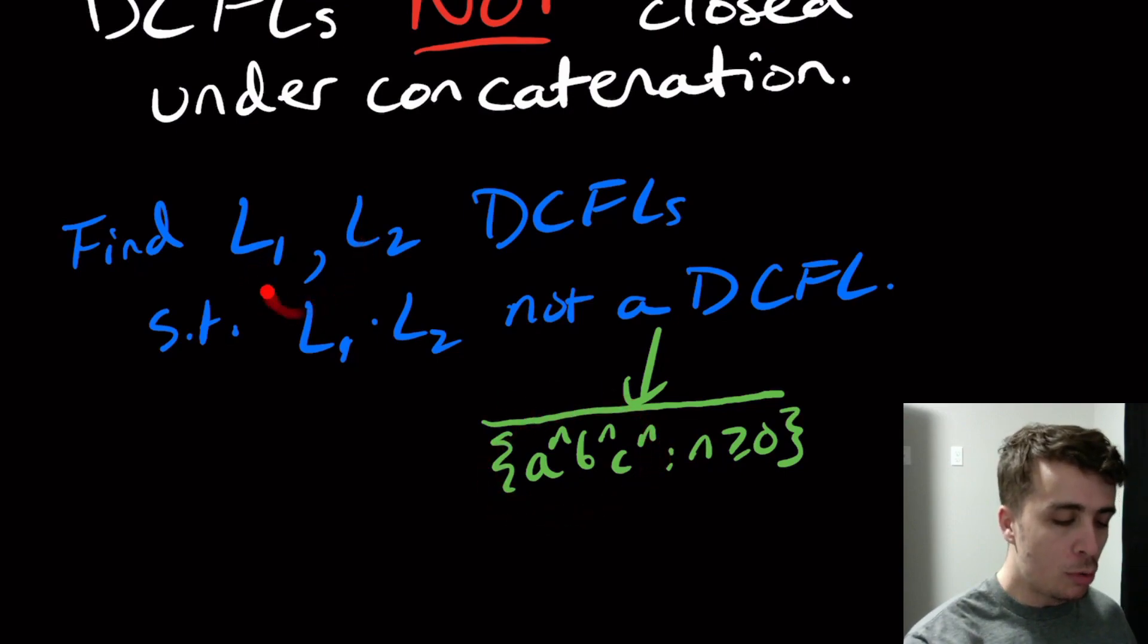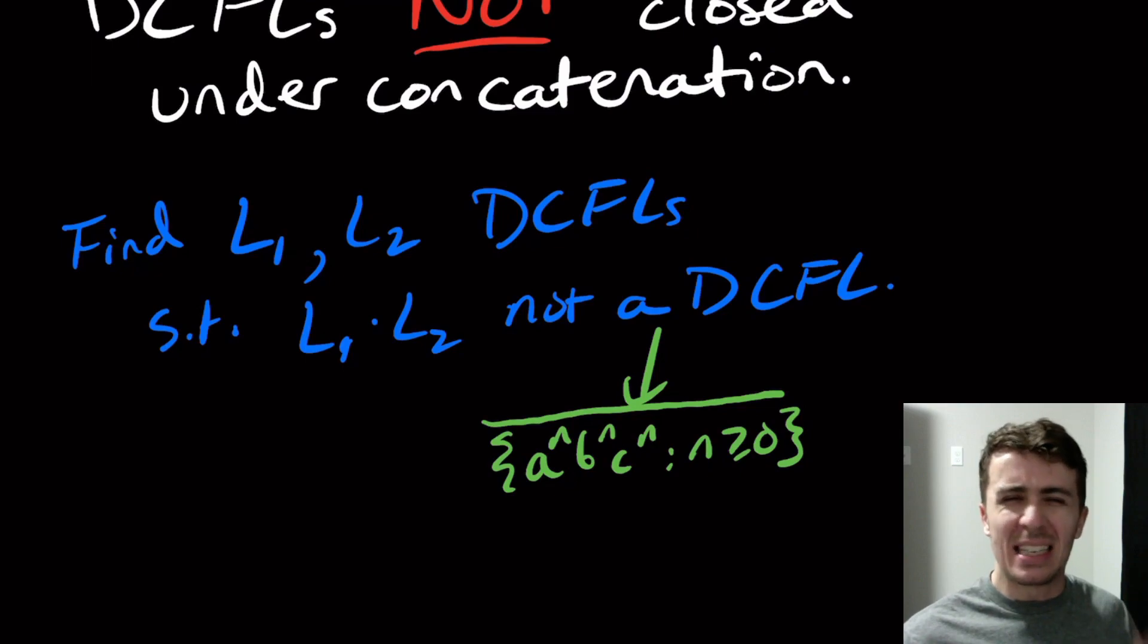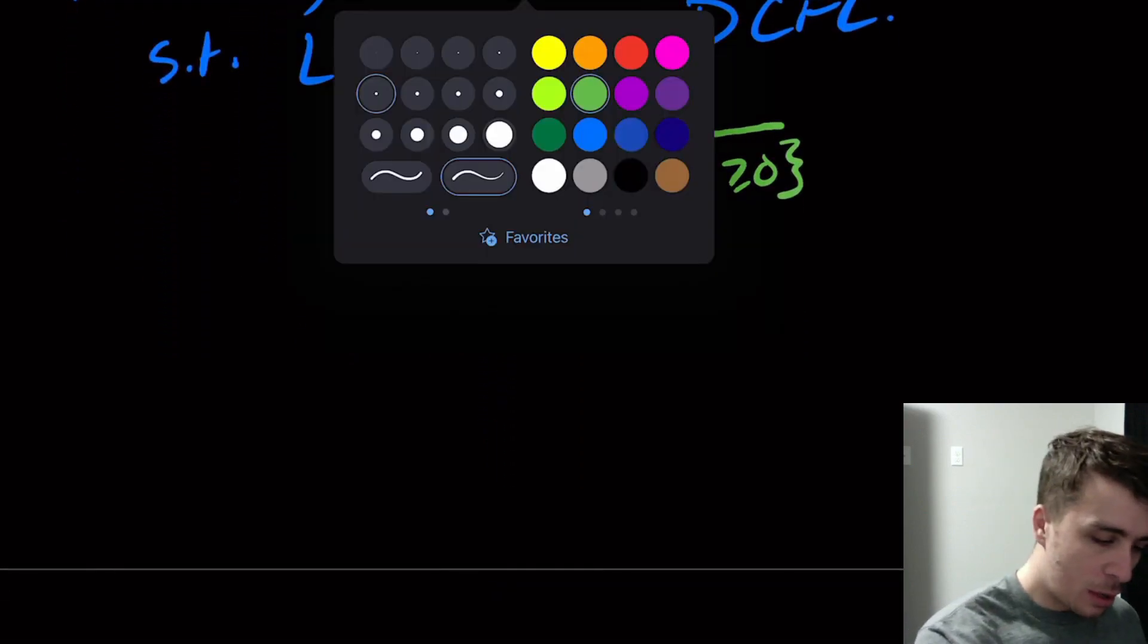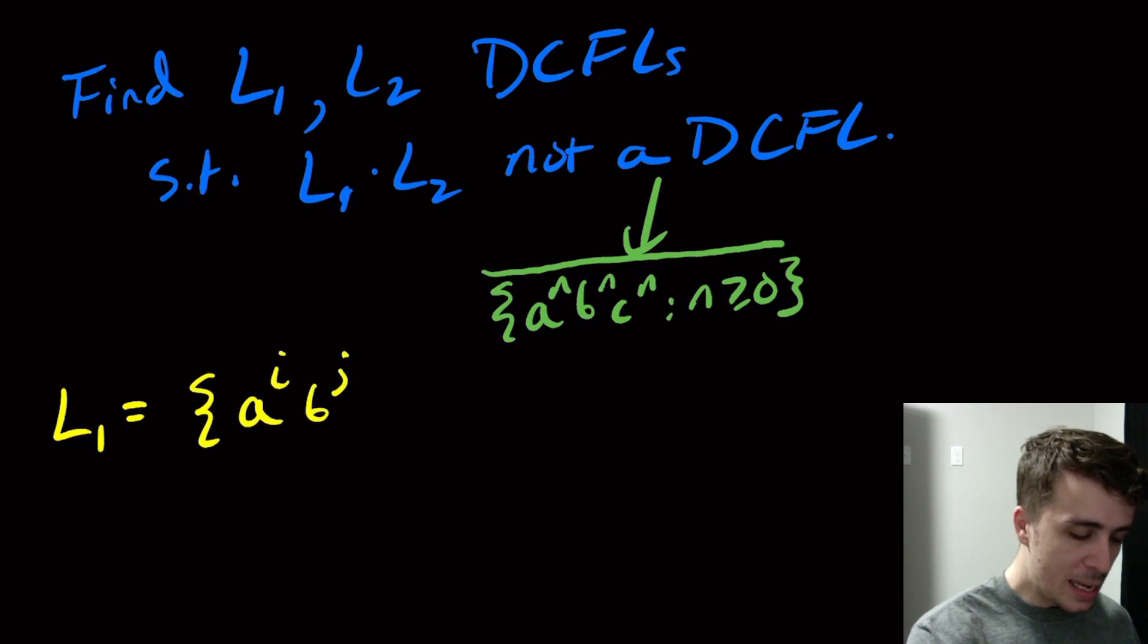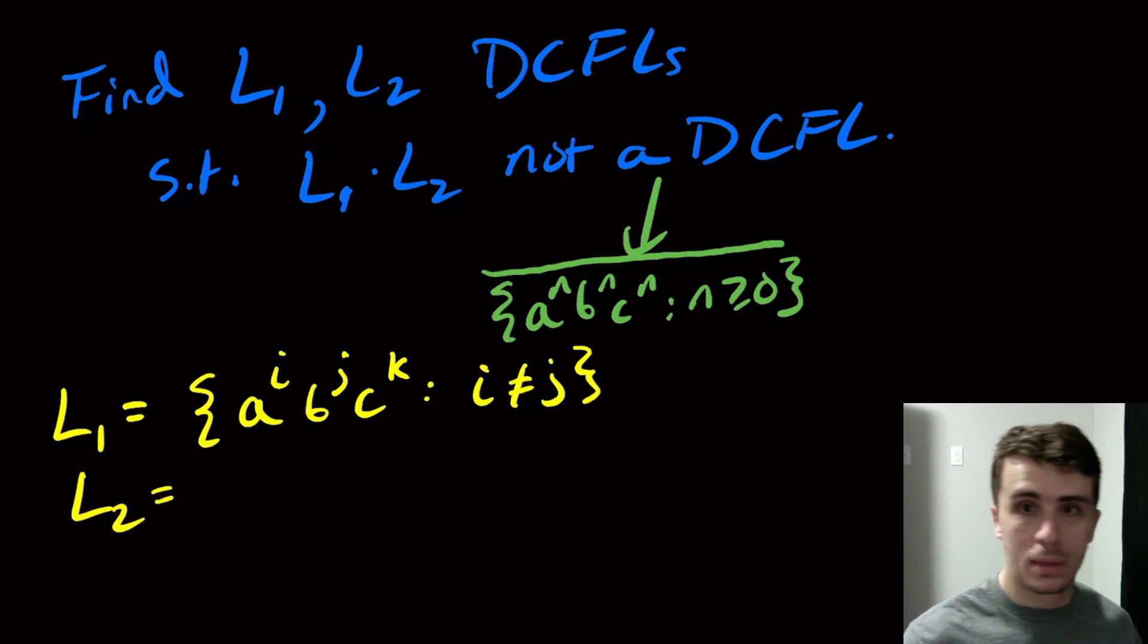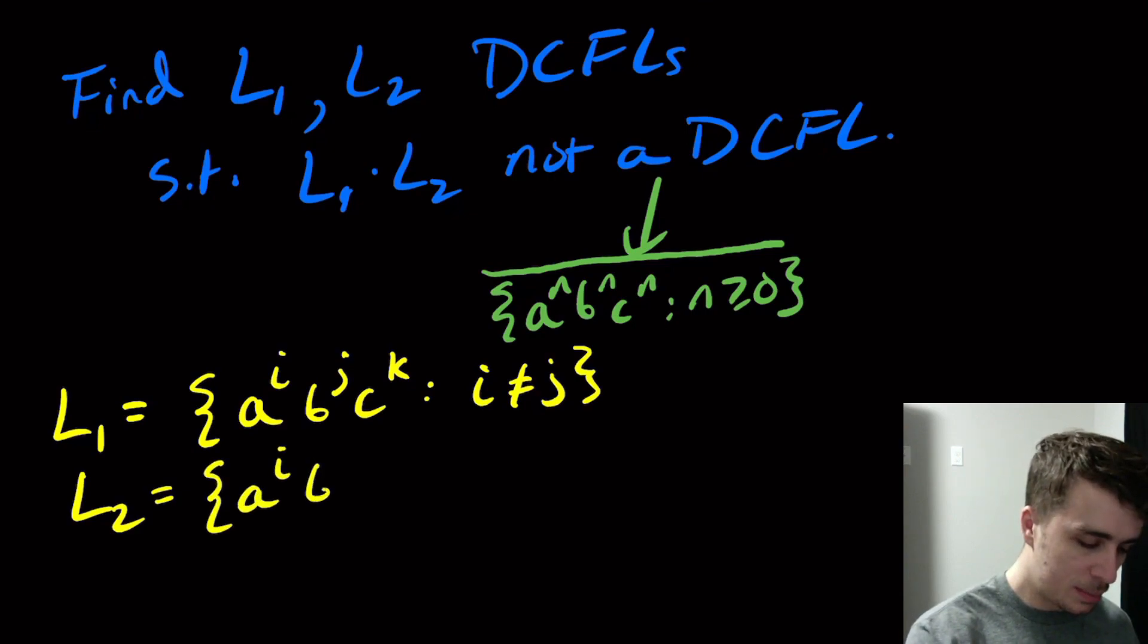So can we find two DCFLs whose concatenation is this guy right here? And the thing is that it's actually pretty hard to get this directly, but we can get it indirectly. So we are going to pick two DCFLs, and the ones that we're going to pick are going to be L1, which is A to the I, B to the J, C to the K, where I is not equal to J, and L2, which is going to be the same exponents, I, J, and K, but now J is not equal to K.